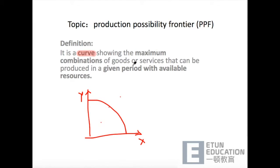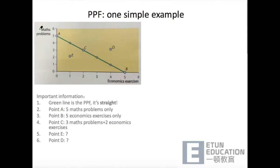还有一个重要点是in a given period with available resources，也就是说我们的production是在一定条件下发生的，它有一个限定的given set of resources。For example, time, capital or human resources。接下来我们来看一个简单的例子。